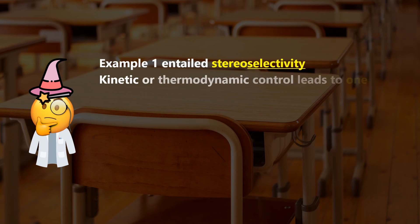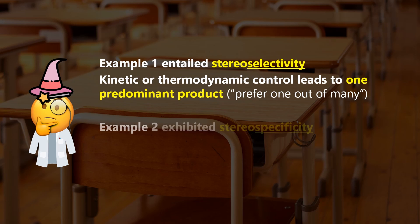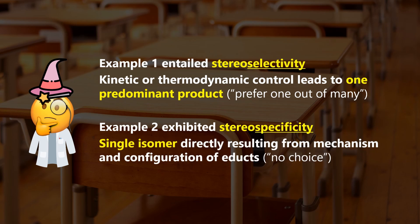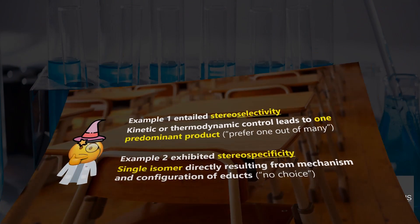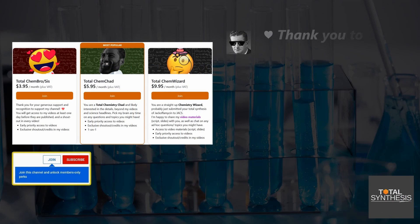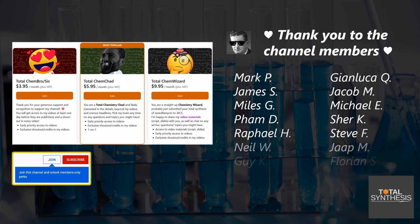To completely put this to bed, the first example we saw exhibited stereoselectivity with formation of three different olefins with different ratios. The second one had stereospecificity because the diastereomers had no other choice but to yield the E or Z-alkene respectively. Before we continue, let me thank all my channel members and also you for watching this video. I'm experimenting with some basic but more visual content, so let me know any feedback and suggestions in the comments.